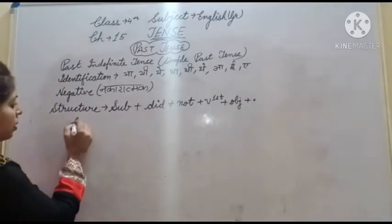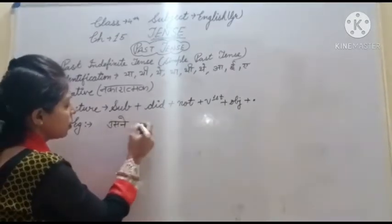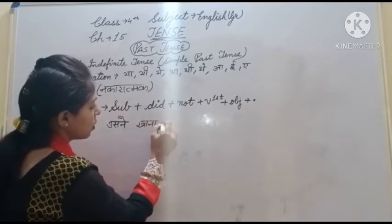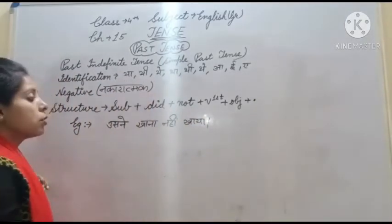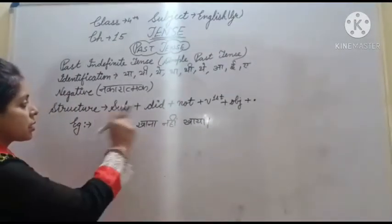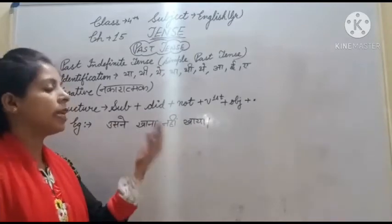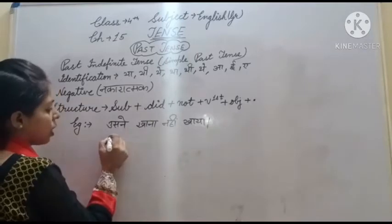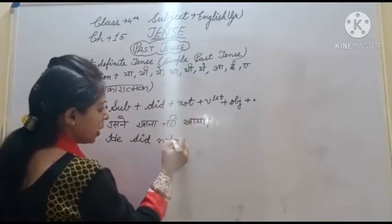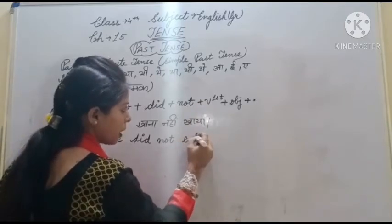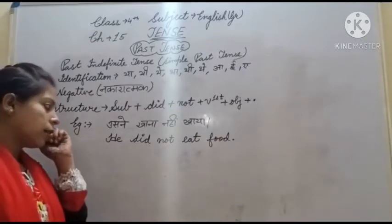Example देखिए बिटा। उसने खाना नहीं खाया। 'या' आ गया — past indefinite tense, और नहीं आ रहा है तो negative हो गया। Structure यूज़ करेंगे: subject 'उसने' means he। He did not — उसके बाद खाने की क्रिया 'eat' — object क्या है? खाना means food। तो: He did not eat food। ठीक है? उसने खाना नहीं खाया।